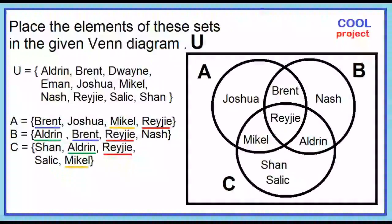Next, are there elements in the universal set not found in sets A, B, and C? Let's check. The elements in sets A, B, and C are: Brent, Joshua, Michael, Nash, Reggie, Salik, Sean, and Aldrin. Dwayne and Eman are elements in the universal set not found in the three sets. Place Dwayne and Eman outside the circles but inside the rectangle.